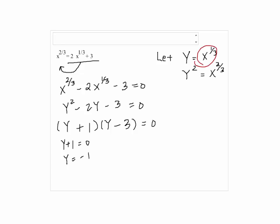Now, the y was x to the one-third. So, x to the one-third equals negative 1. So, to get rid of one-third to find x, you're going to cube both sides. So, the exponent is gone. So, we have x equals negative 1.